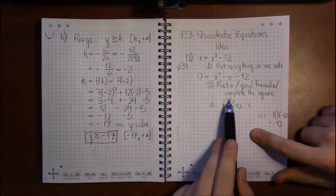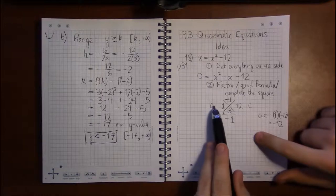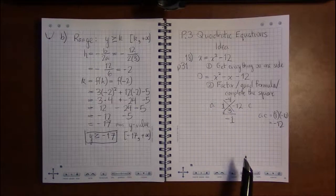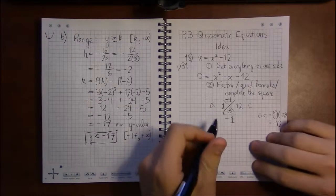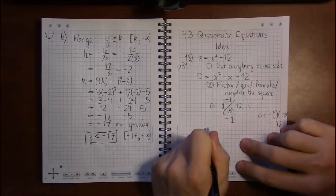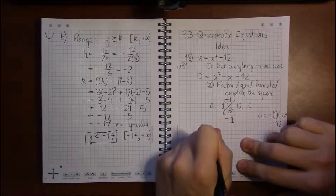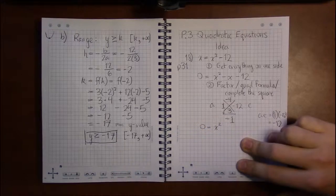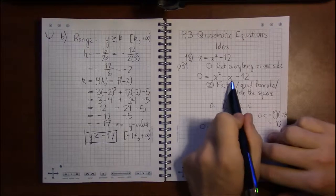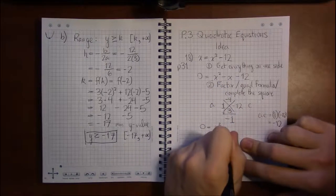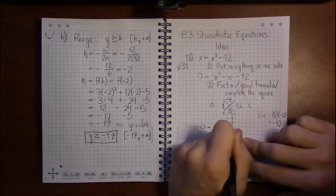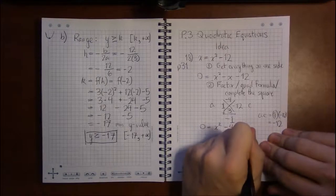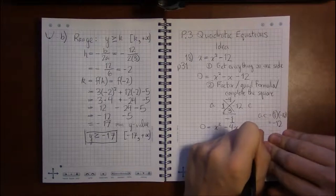So adding I get the middle number, multiplying down is the same thing as multiplying across. And then what I do with this is I'm going to break up minus x. I'm going to write minus x in a really funny way—I'm going to write it as minus 4x plus 3x.